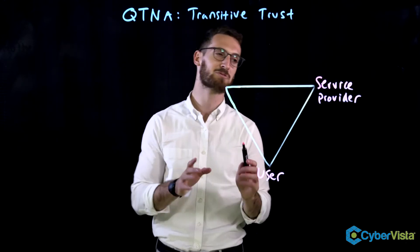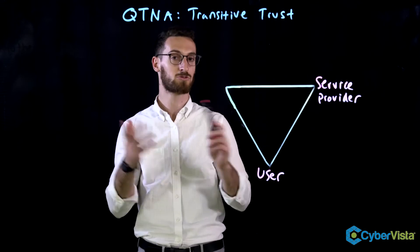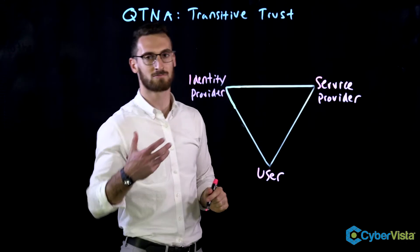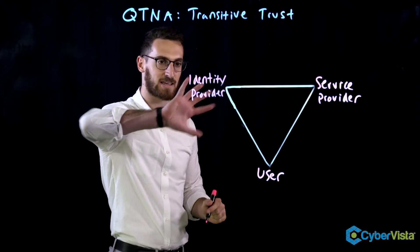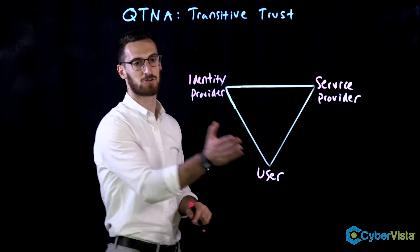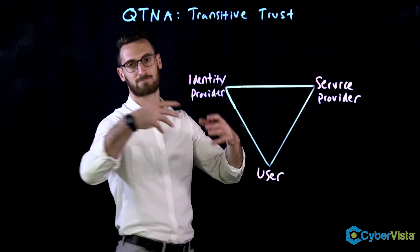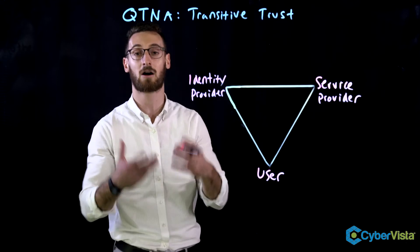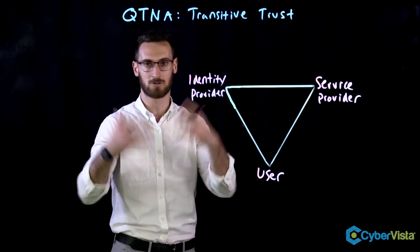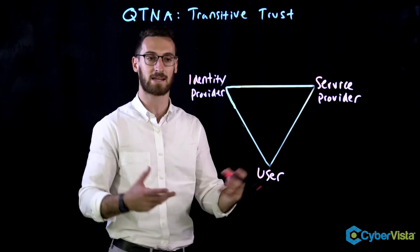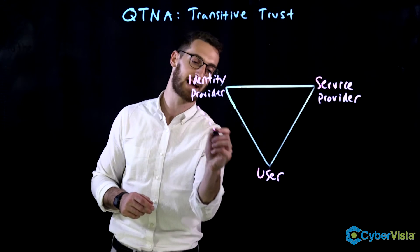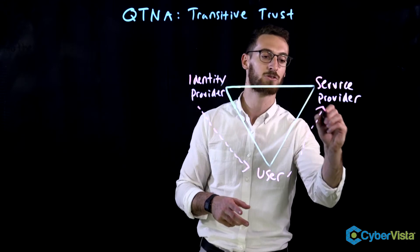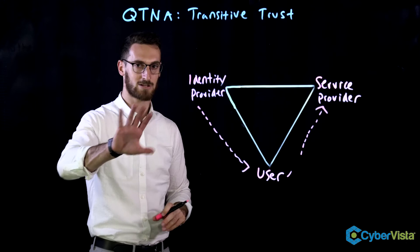The service provider may not have the ability to actually authenticate that user, or they don't trust the user. So what happens is the service provider says, I'm going to send you to somebody who I do trust who can do that for me — that's the identity provider. All the hard work of authentication happens on the identity provider side. So the user sends a request for authentication, and the identity provider responds and says, let me make sure you can actually be authenticated — do you know this password, for example? If the user is able to properly be authenticated, the identity provider sends back an authentication token, which the user can then take and present to the service provider.